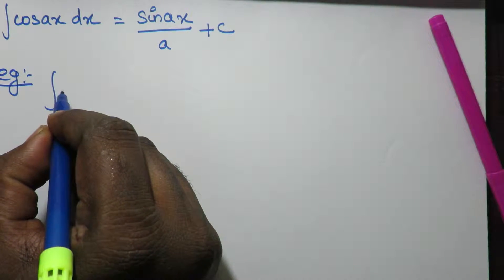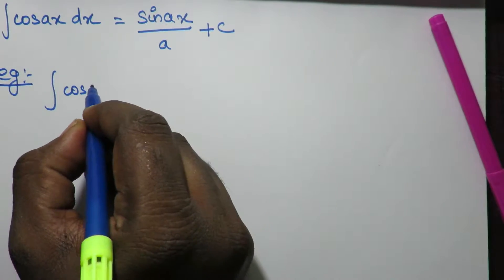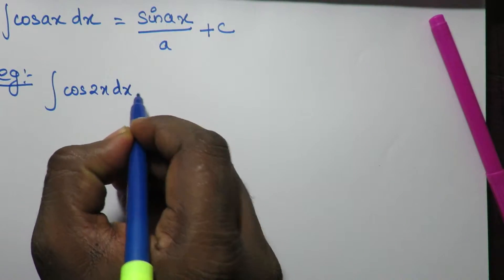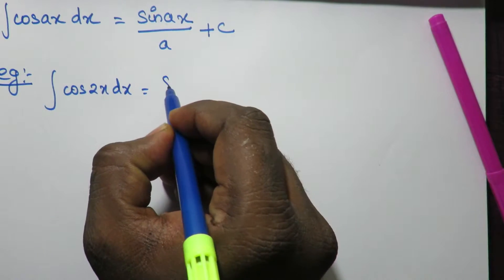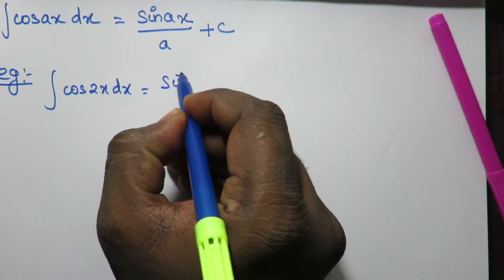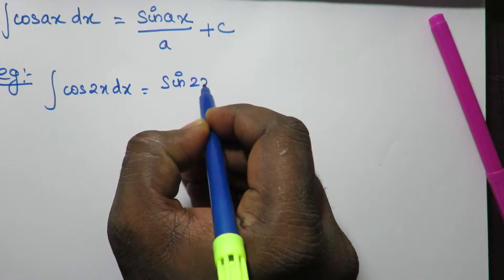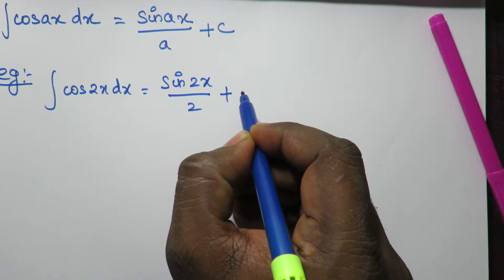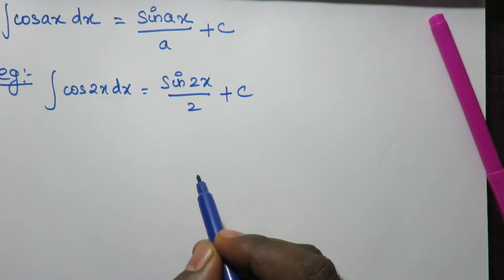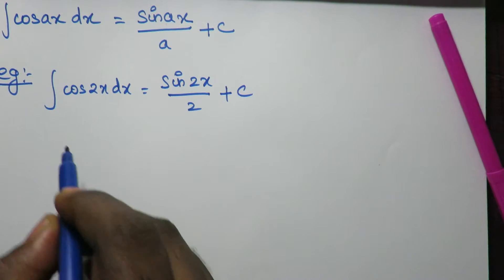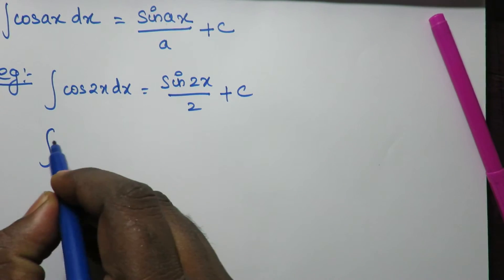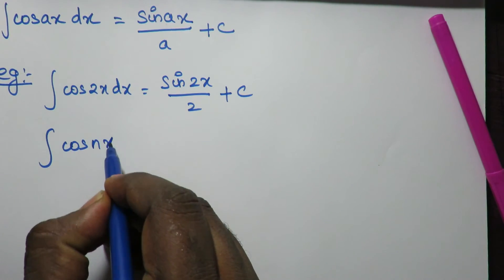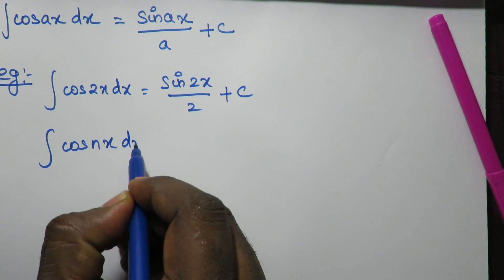For example, to integrate cos(2x) dx, the formula gives sin(2x)/2 + C. Similarly, to integrate cos(nx) dx, the result is sin(nx)/n + C.